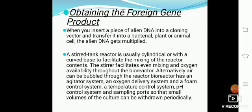Regarding obtaining the foreign gene product: when recombinant DNA is transferred into bacterial, plant, or animal cells, the foreign DNA is multiplied. Most recombinant DNA technologies aim to produce desirable proteins. According to the central dogma of biology, DNA is converted into RNA, and RNA is converted into protein. So the goal is to produce a desirable protein through recombinant DNA technology.